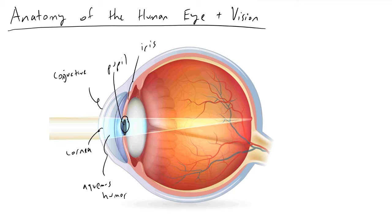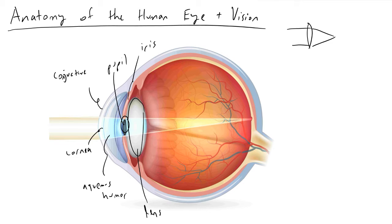After a photon makes it through your pupil, the next thing it's going to do is pass through the lens. The lens is this white region right here. The job of the lens, if we took a physics class, is to converge the parallel incoming or incident light rays. The lens will take in rays and cause them to converge, and we want them to ideally converge at the back of our retina where we'll have a particular cell type like a rod or a cone.